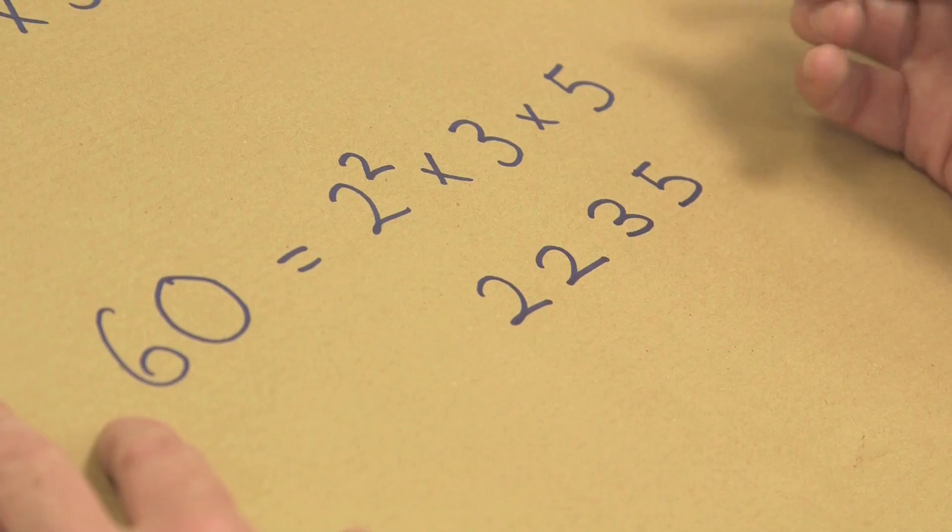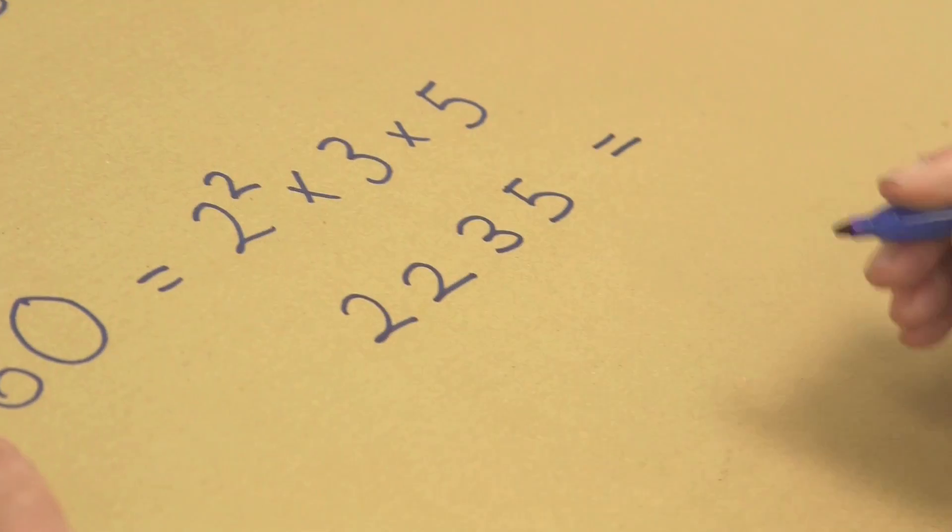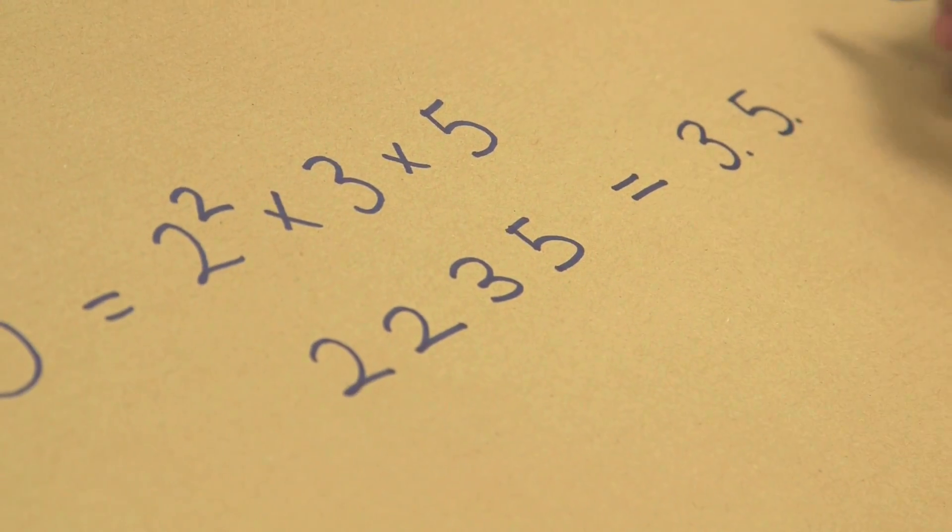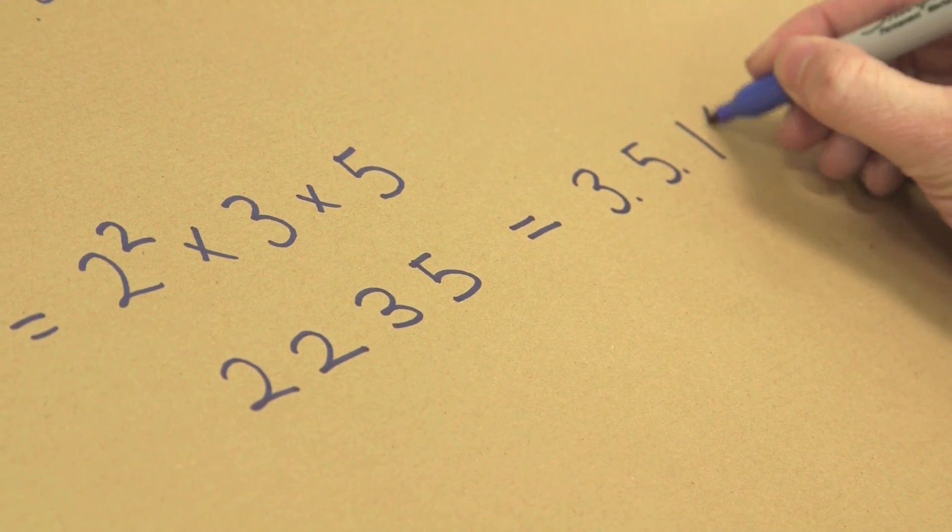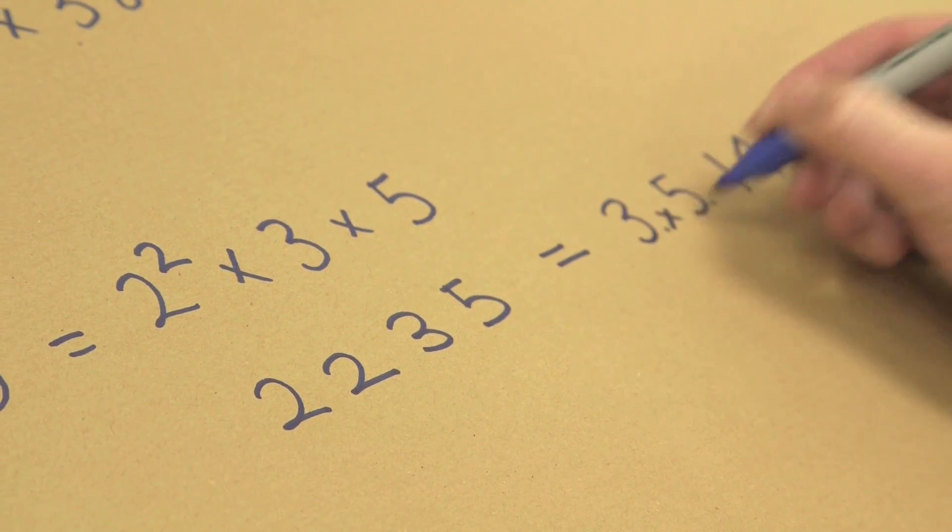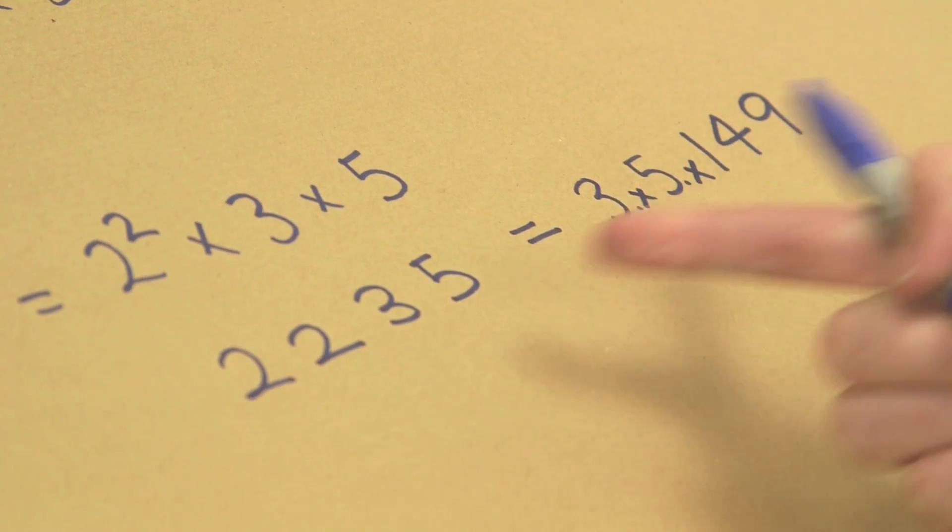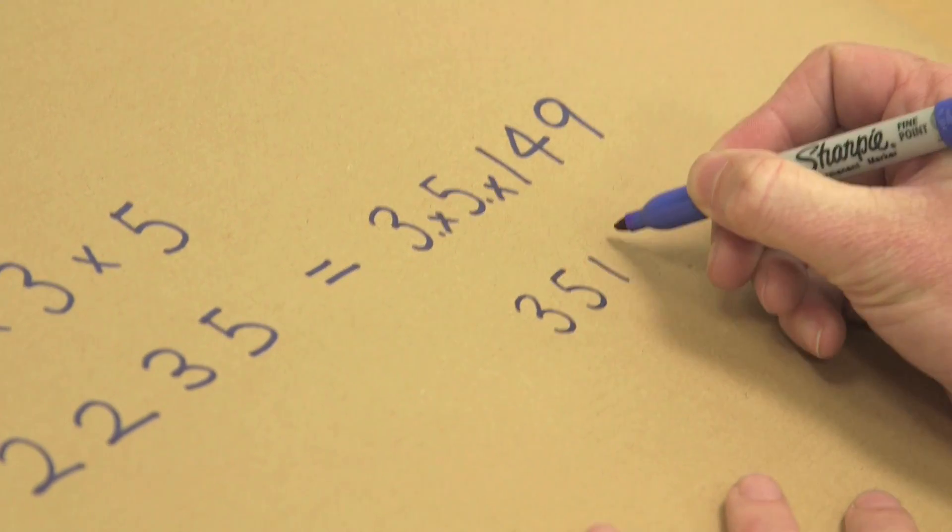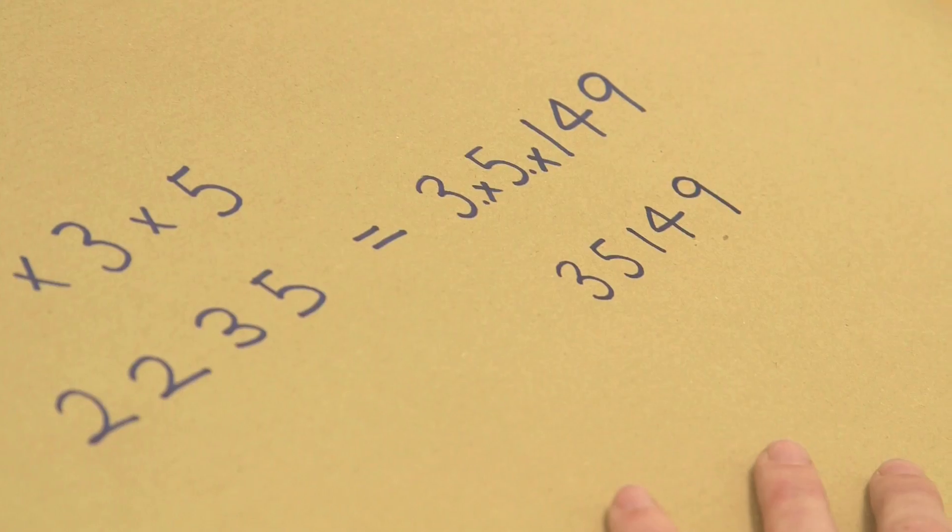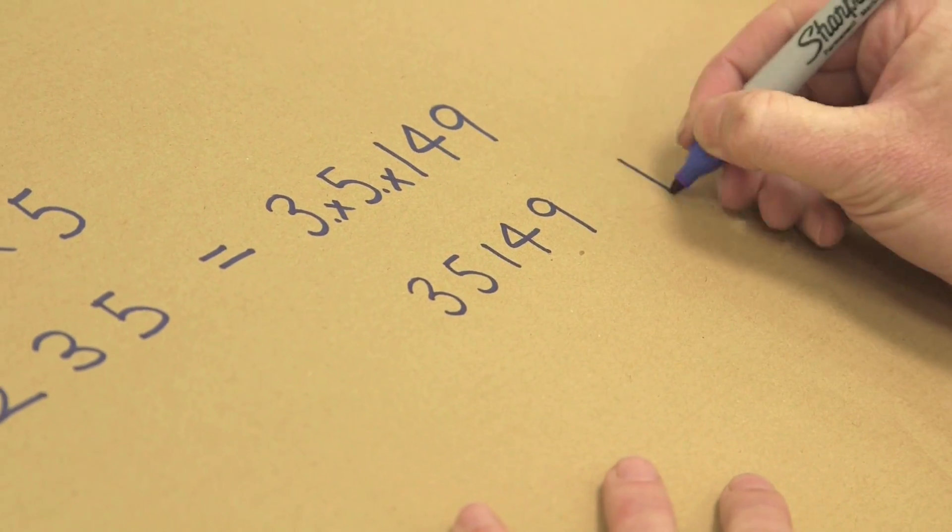Now I do the prime factorization again. So this happens to be 3 times 5 times 149. So now you use this, you do the iteration again, and you create a new number. And the new number, of course, is going to be 3, 5, 1, 4, 9. This is a prime number.